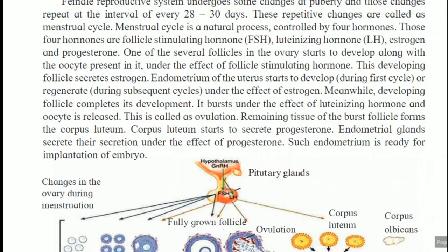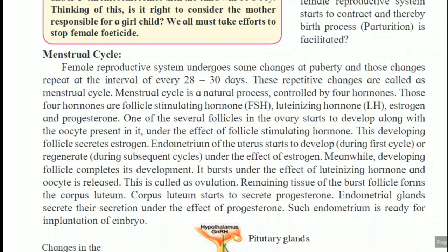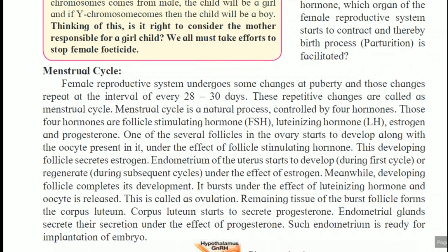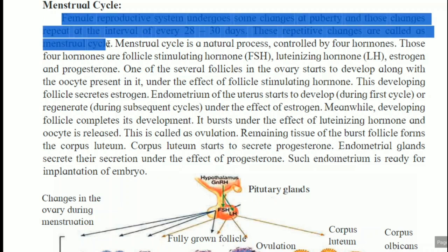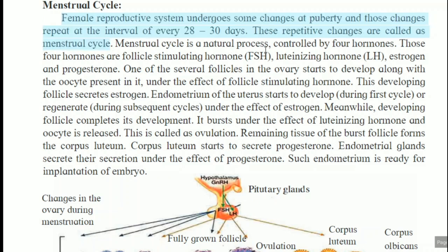The next part is the menstrual cycle, which is related to the female reproductive system. The female reproductive system undergoes some changes at puberty, and those changes repeat at an interval of every 28 to 30 days. These repetitive changes are called the menstrual cycle. The menstrual cycle is a natural process controlled by four hormones: follicle stimulating hormone (FSH), luteinizing hormone (LH), estrogen, and progesterone.